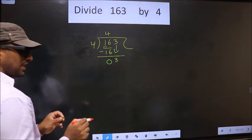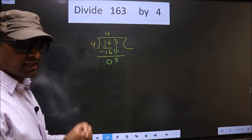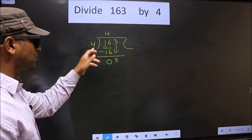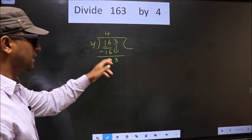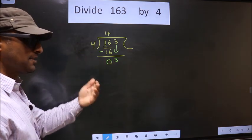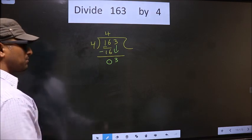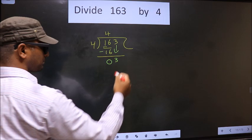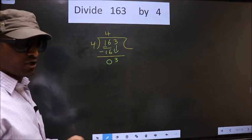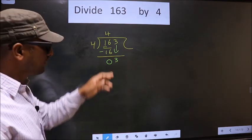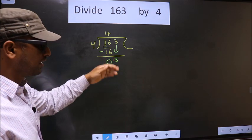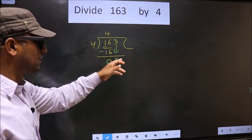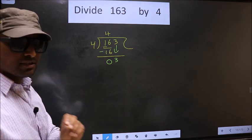This is where the mistake happens. Here we have 3, and here we have 4. 3 is smaller than 4. So what many do is they put a dot and take 0 here, which is wrong. Just now you brought the number down, and in the same step you want to put a dot and take 0, which is wrong.